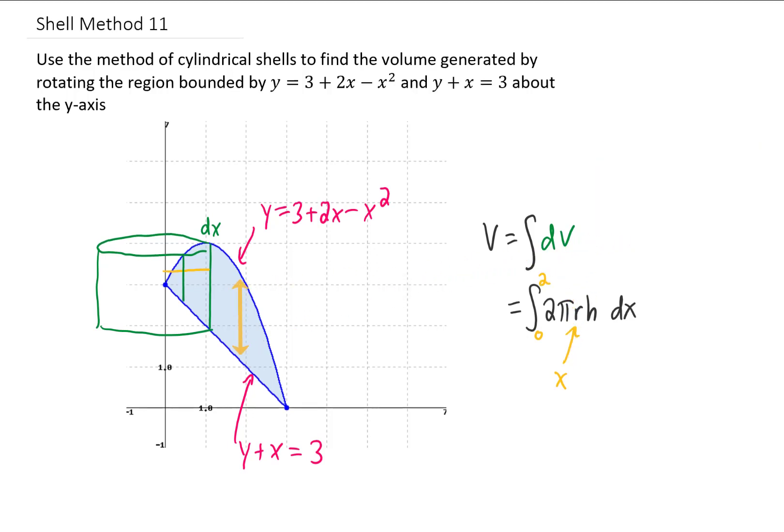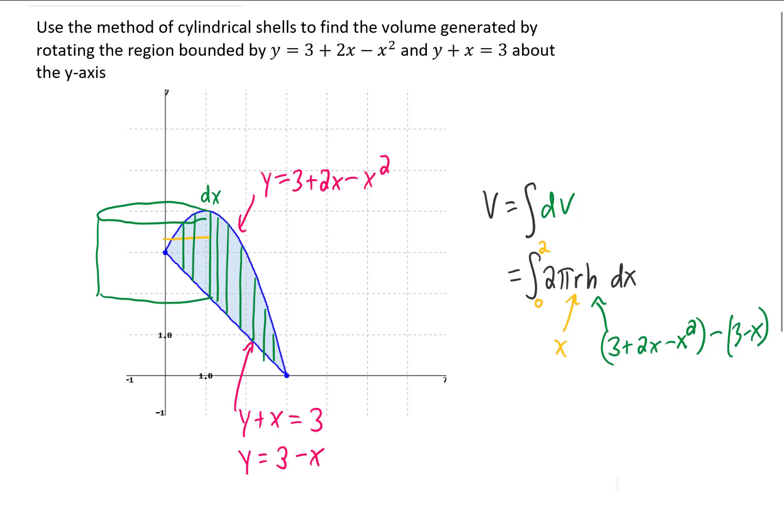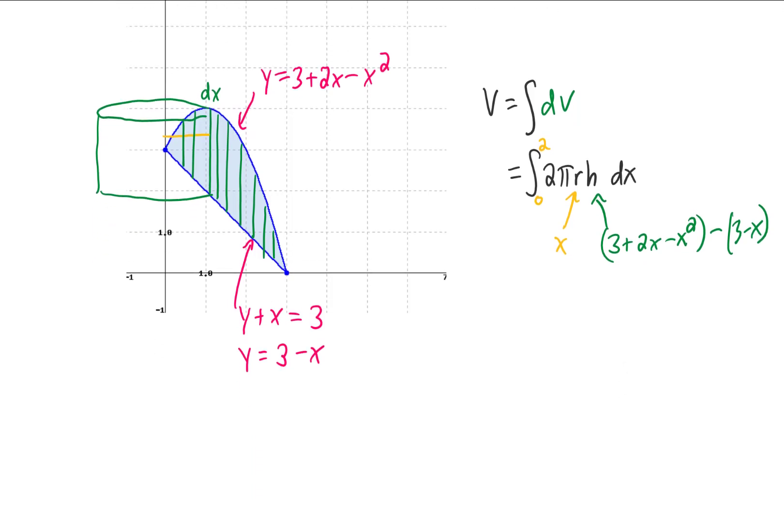Now the height of each one of these shells, no matter how I slice it, is going to be based on the upper function minus the lower function. In other words, this height is just going to be 3 + 2x - x² minus this lower function, which I'm noticing now we need to solve to give us 3 - x. Okay, let's plug all that stuff in and see what we get for our volume.